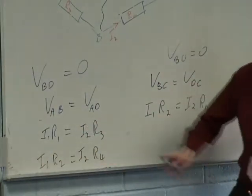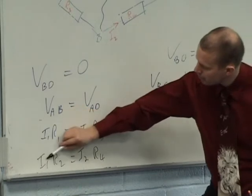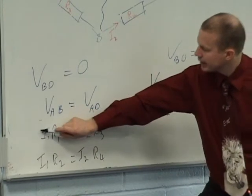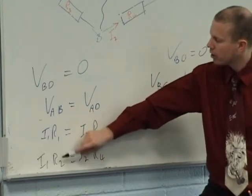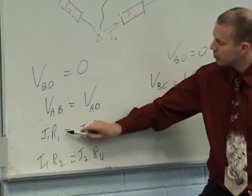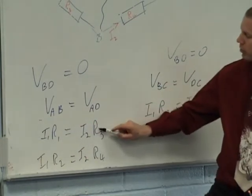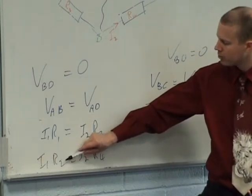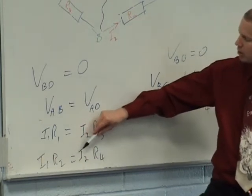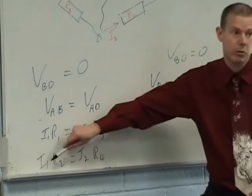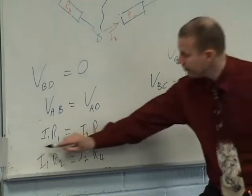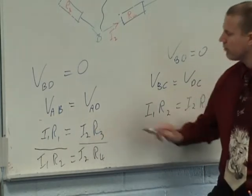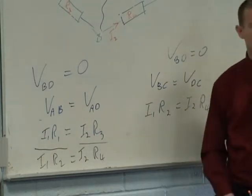I'll divide i1 r1 by i2 r2. So if I'm dividing the left-hand side of that equation by i1 r2 and I want to keep an equals, I must divide the right-hand side of the equation by i1 r2. But instead of dividing by i1 r2, I want to divide by i2 r4 because it's equal to i1 r2. So it's the same thing. Basically, I divide the left-hand side by i1 r2 and I divide the right-hand side by i2 r4.